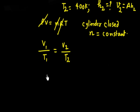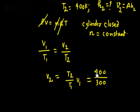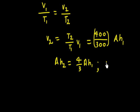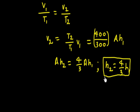From V1/T1 = V2/T2, we get V2 = (T2/T1) × V1. With T2 = 400 K and T1 = 300 K, substituting V1 = A×H1 and V2 = A×H2, the A cancels out giving H2 = (4/3) × H1. Since H1 = 1 meter, H2 = 4/3 meter.